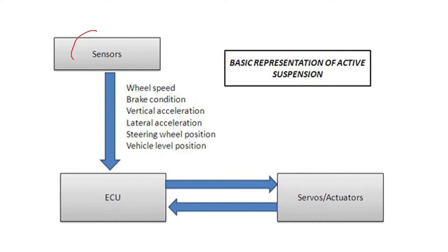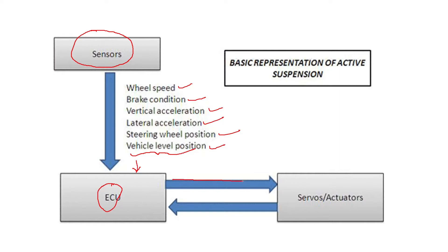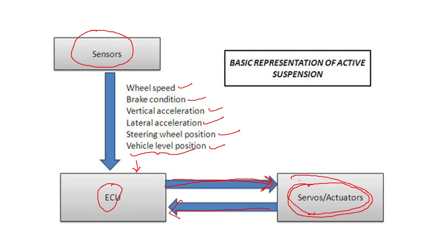So here the basic idea is that sensors are very important. They will give information of wheel speed, brake condition, vertical acceleration, lateral acceleration, steering wheel position, and vehicle level position. Depending upon this information from all these parameters, the data is given to the Electronic Control Unit (ECU), which is then going to activate the actuators or servos to control the suspension of your vehicle. The suspension module will also give its feedback to the ECU.